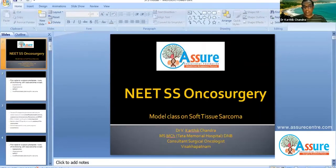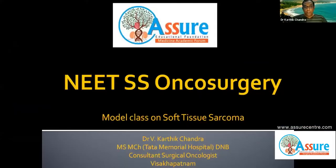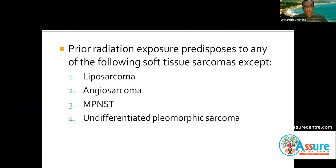Can you see my screen? So, just a question on risk factors for soft tissue sarcomas. Prior radiation exposure predisposes to many soft tissue sarcomas, but one among these does not occur in radiation fields. Which one is it? Liposarcoma, angiosarcoma, malignant peripheral nerve sheath tumor, or undifferentiated pleomorphic sarcoma?